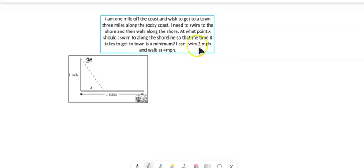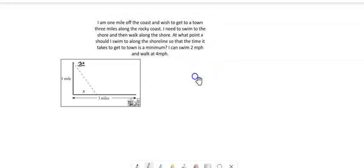Here's another example, and this is kind of a classic example for these types of problems. So I'm one mile off the coast, and I wish to get to town that's three miles along that same coast. We're going to swim to shore and then walk along the shore. And the question is, at what point X, this distance from straight from where you are to the shore, where should that be to minimize the time it takes to get to town? So we want to minimize time.